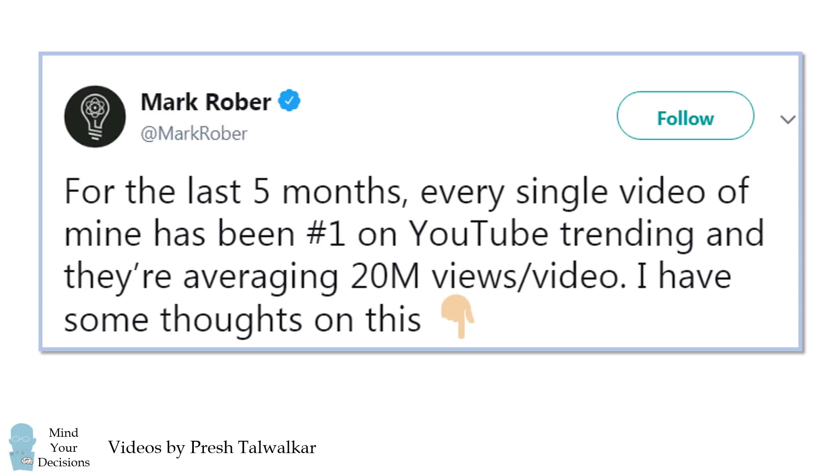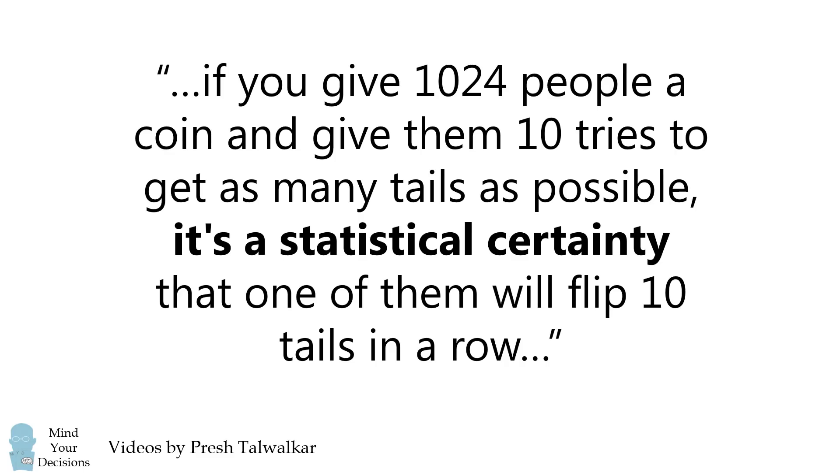He was trying to put some perspective on his fortune. In his explanation, he had the following sentence: If you give 1024 people a coin, and give them 10 tries to get as many tails as possible, it's a statistical certainty that one of them will flip 10 tails in a row.